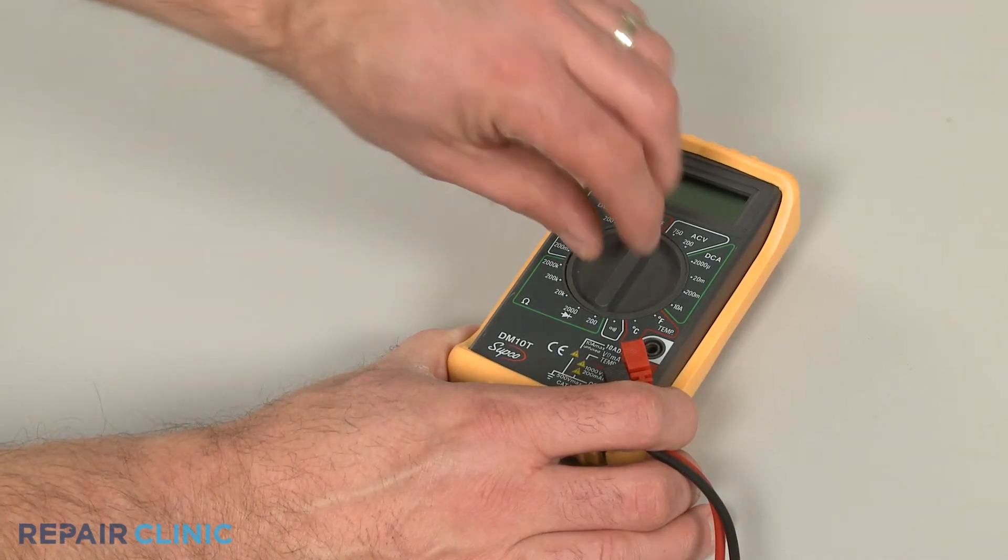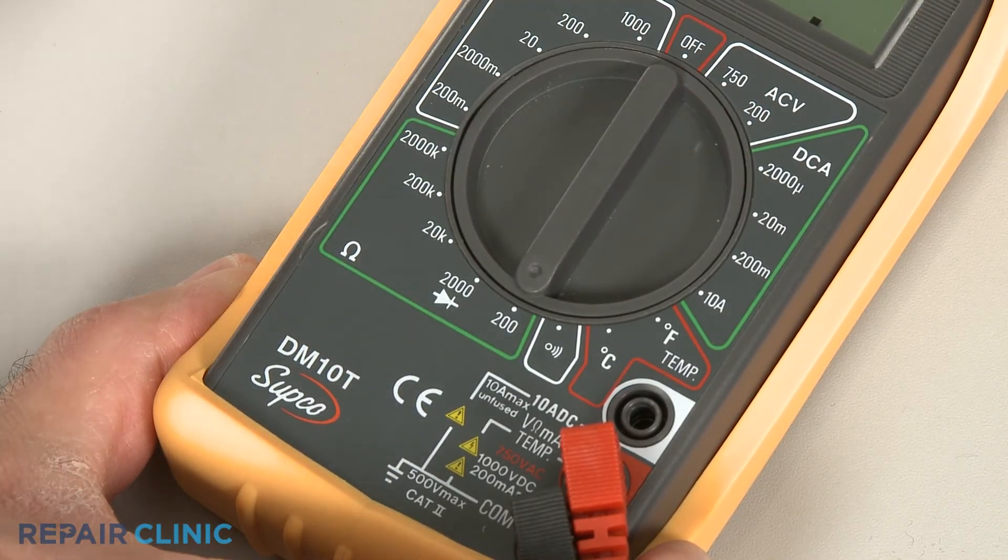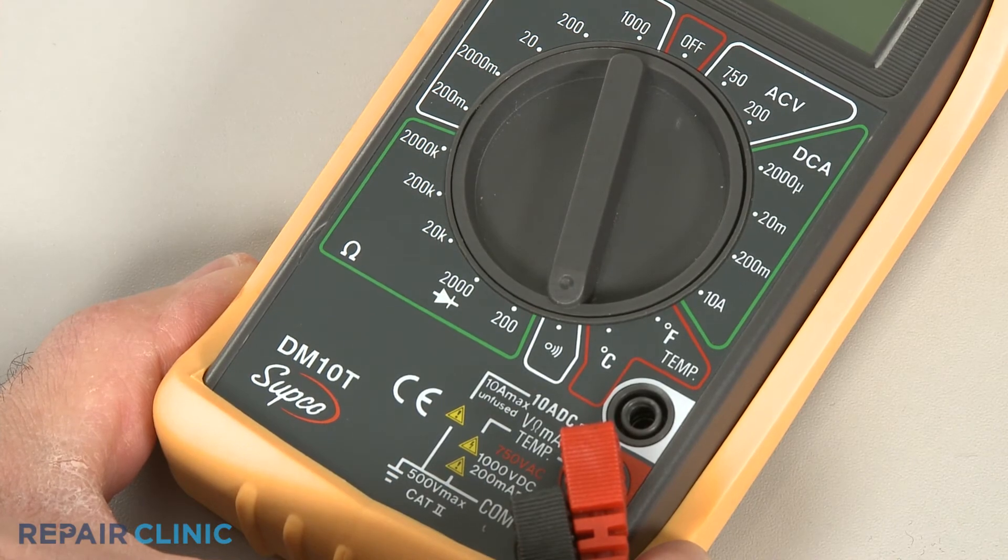When using a digital model, again rotate the dial to the lowest setting for ohms of resistance, or resistance with tone, if your meter has this option.